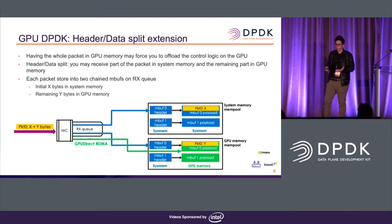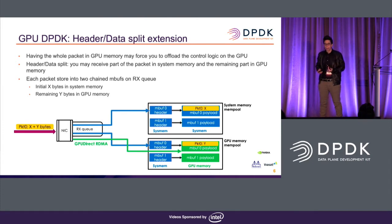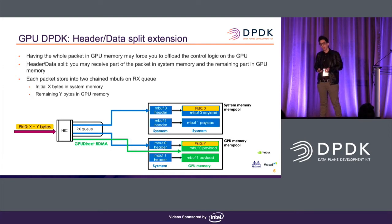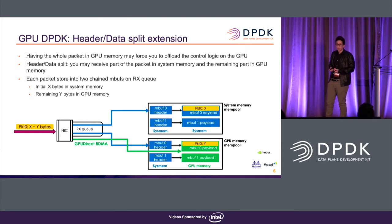There may be cases where having the whole packet in GPU memory is suboptimal. For example, if you have a custom network protocol with headers that need CPU processing, it may be better to receive the first part of the packet in system memory for CPU handling, and the remaining payload in GPU memory. This is the use case required by Viasat.